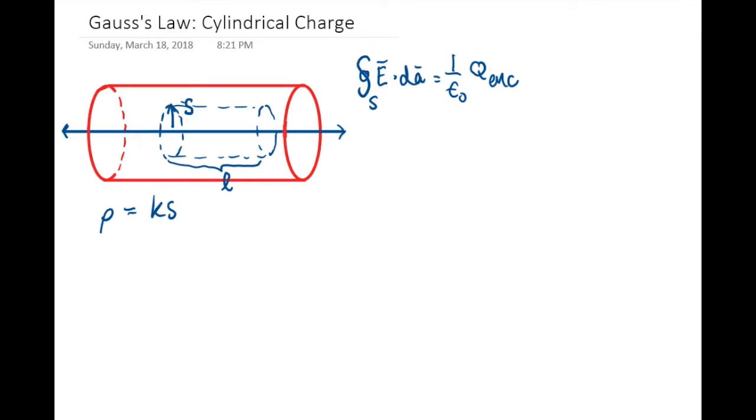We'll find the total charge enclosed by integrating the charge density over the volume of the cylinder. That will be ks integrated in cylindrical coordinates. We'll be integrating φ from 0 to 2π, z from 0 to l because that's the length of the cylinder, then s from 0 to s. If that's confusing, I'll call the radius s prime.